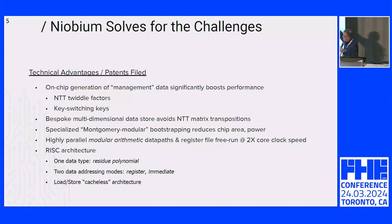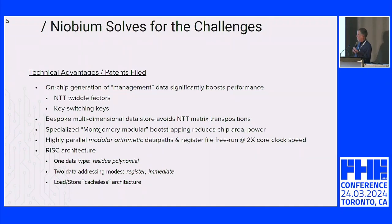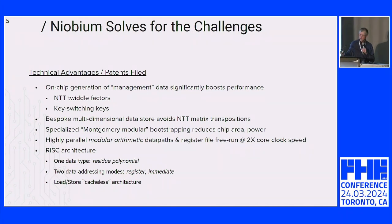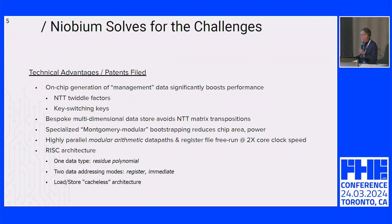This overall set of speedups is coupled with a RISC architecture — a load-store architecture with about 25 instructions. We only have one data type on the entire chip: the residue polynomial. We have only two addressing modes and we don't use caches. All we have is register addresses and immediate operands, so the entirety of memory is addressable as a large register file, greatly reducing wasted space.